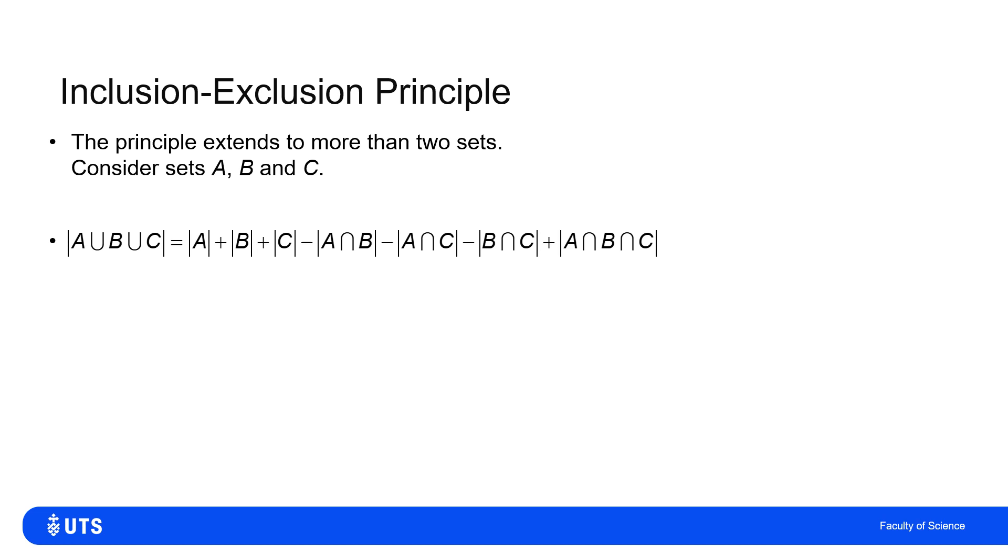But following that logic creates another problem. Because if anything is in all three sets, I've counted it in A, plus counted it in B, plus counted it in C, so I've triple counted it. But then I've excluded it because it's in A and B, and I've excluded it because it's in A and C, and I've excluded it because it's in B and C. So I've added it three times, included three times, then excluded three times,